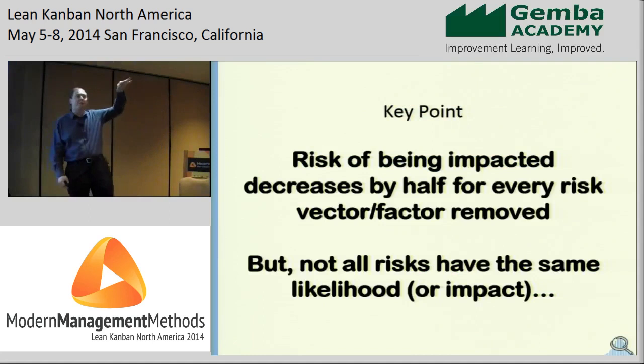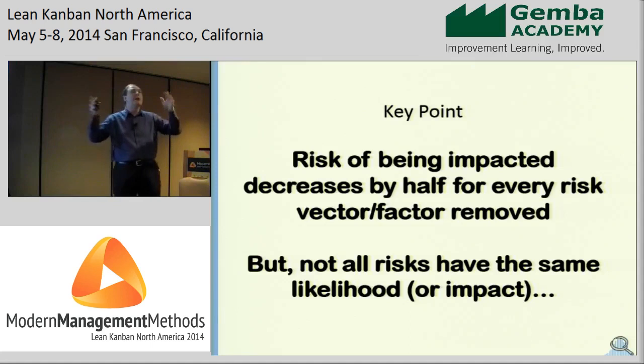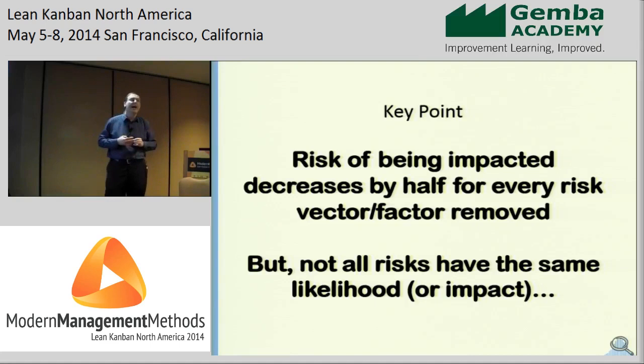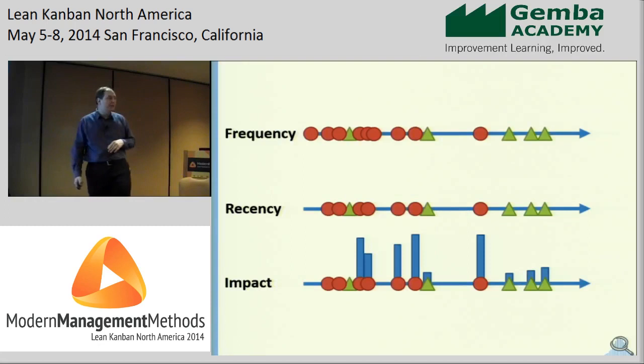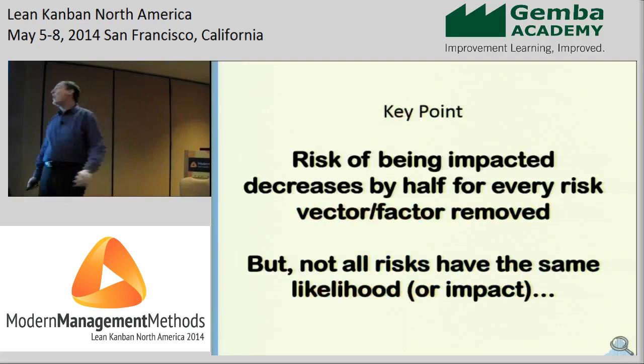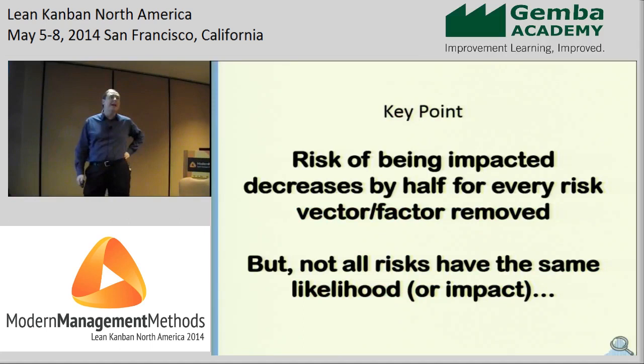What did we just learn? If we reduce risks or dependencies, every risk we reduce halves the number of possible combinations. There is no risk vector that isn't worth removing — every one of them in a category has the opportunity to halve the number of delay cases. You go from one in 128 to one in 64. So now: which ones are cost-effective to remove? How do you choose which risk is in your economic interest to remove?